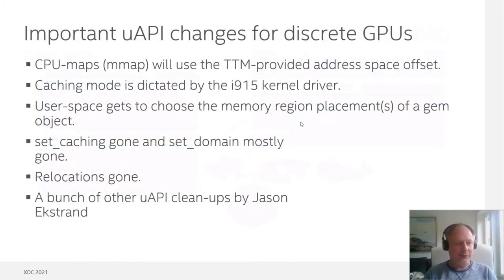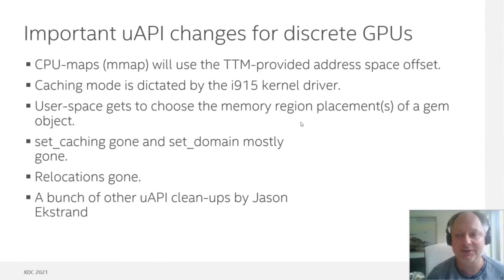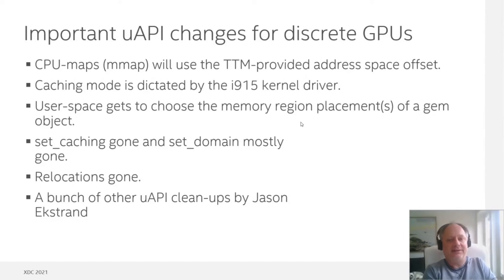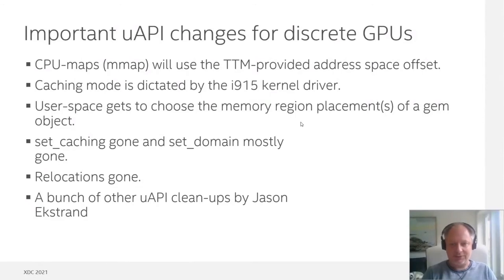We have made some important UAPI changes for discrete GPUs. First, CPU maps will use the TTM-provided address space offset when mapping buffer objects, instead of requesting its own based on the caching that user space wants. This also means user space has to live with the caching mode the kernel driver selects, which depends on whether we're allowing LMEM in the placements or just system memory. User space also gets to choose the memory region placements of a GEM object — only in system, only in VRAM/LMEM, or any set of memory regions.